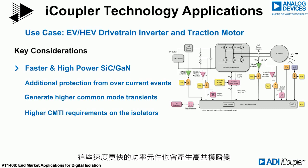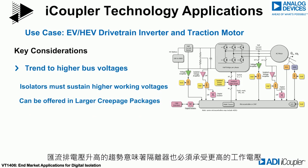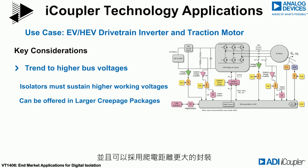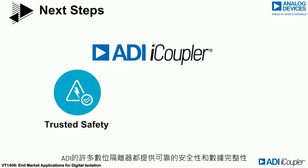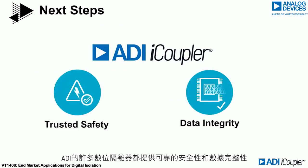These faster power devices also generate high common mode transients, placing a higher CMTI requirement on the isolators. The trend towards higher bus voltages means the isolators must sustain higher working voltages too, and can be offered in larger creepage packaging. Analog Devices has many digital isolators that provide trusted safety and data integrity.